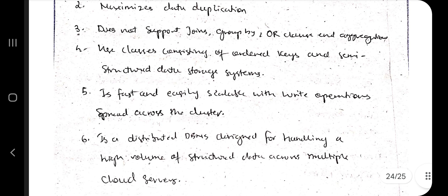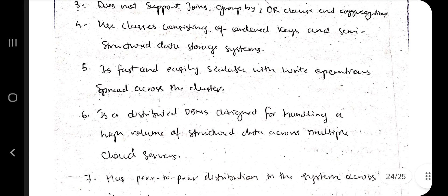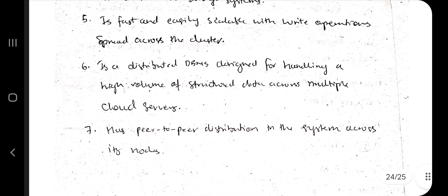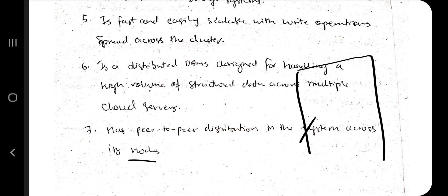Fast, easily scalable, and write operations spread across the cluster - many different answer scripts came out of that machine. It's a distributed database designed for handling high volume of structured data across multiple cloud servers - many answer scripts means huge data. And has peer-to-peer distribution in the system across its nodes - when those answer scripts came, the backbenchers took each and submitted after writing their own name.